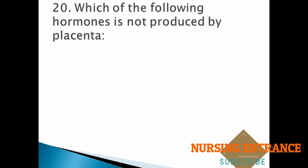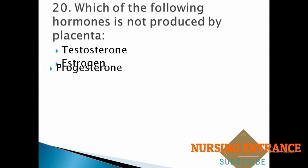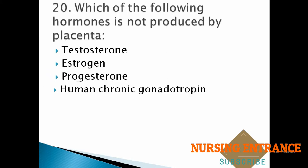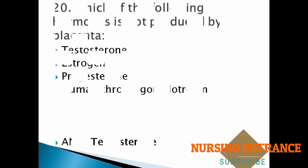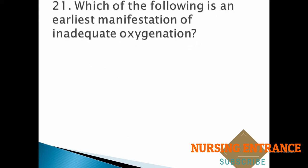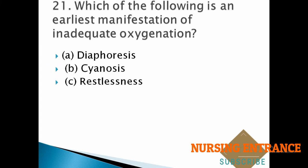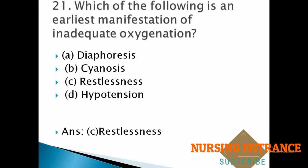Question number twenty: which of the following hormones is not produced by the placenta? Options: testosterone, estrogen, progesterone, human chorionic gonadotropin. The correct answer is testosterone. Question number twenty-one: which of the following is the earliest manifestation of inadequate oxygenation? Options: diaphoresis, cyanosis, restlessness, hypotension. The correct answer is restlessness.